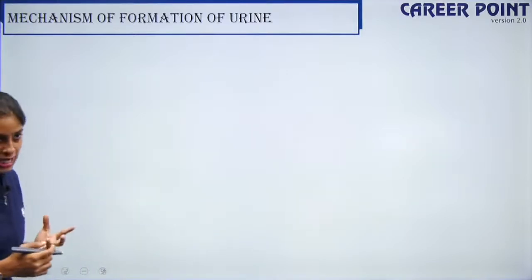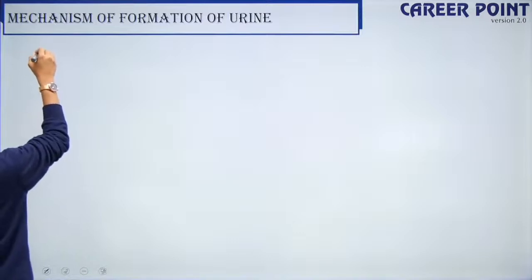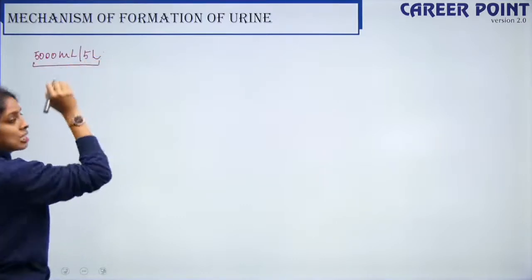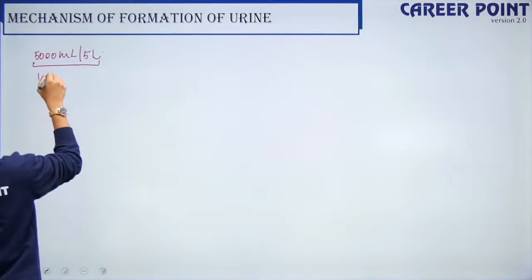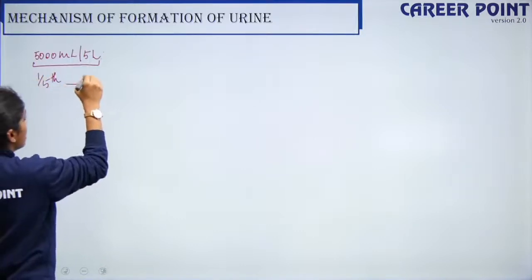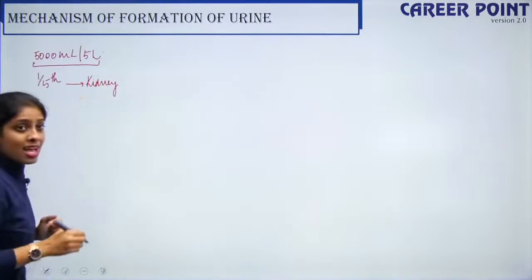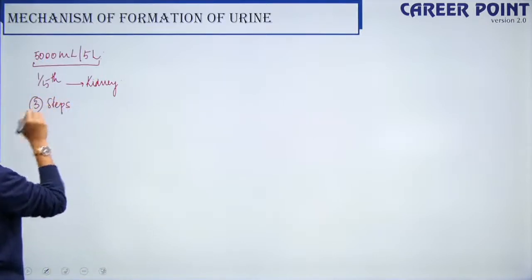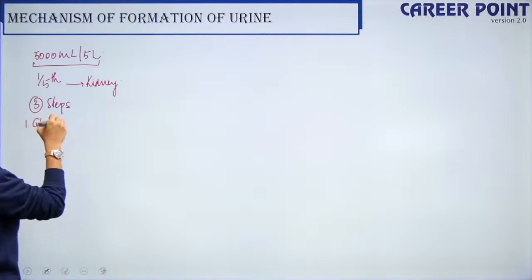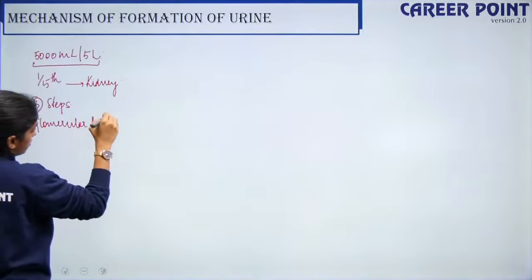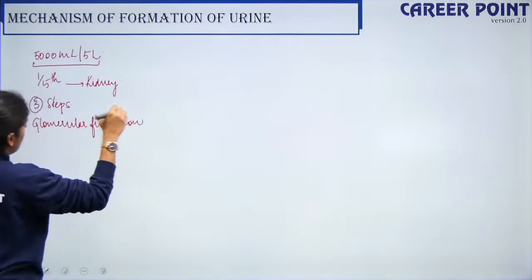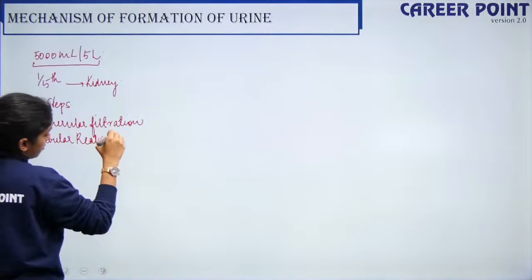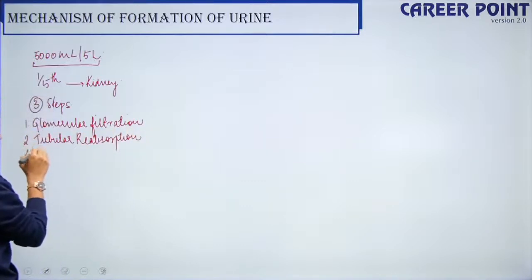The cardiac output is 5000 ml or 5 liters — this is the amount of blood your heart's ventricle pumps. Out of this, one-fifth of the blood from the heart enters the kidney. This blood has to be filtered for waste substances, and thus your kidney produces urine. This happens in three steps: the first step is glomerular filtration, the second step is tubular reabsorption, and the third is tubular secretion.